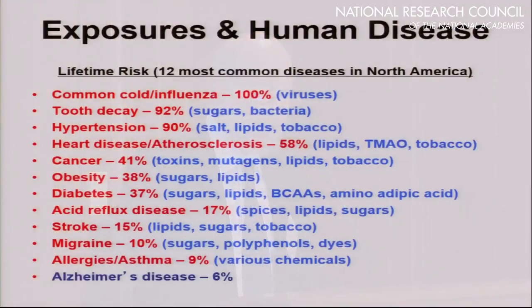The one exception at the bottom, number 12, is Alzheimer's, which is one where we have no clear understanding of the origin and etiology. But more and more people are realizing it might be a type 3 diabetes of the brain, so it too may also have a clear environmental cause.